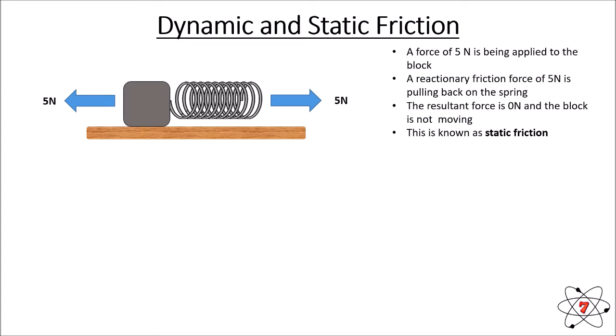We call this static friction — friction is still taking place between the block and the table, but the force applied is not enough to overcome it, so there is friction but no movement. With static friction there is also no heat generated because the objects are not sliding past each other.